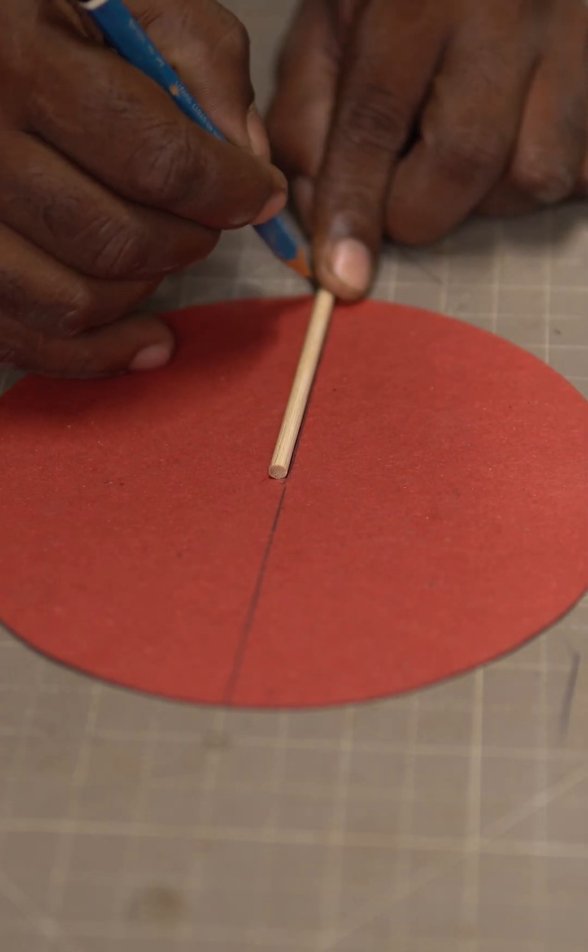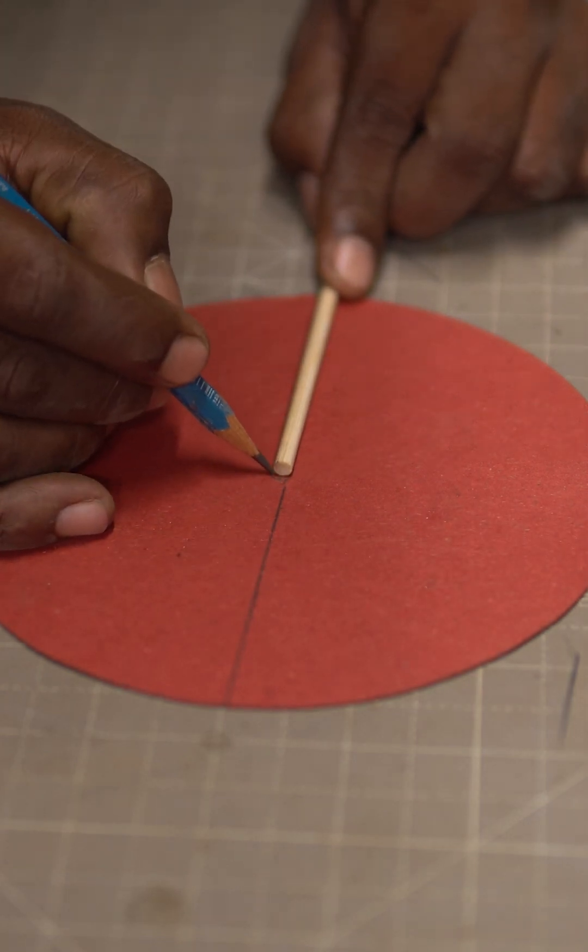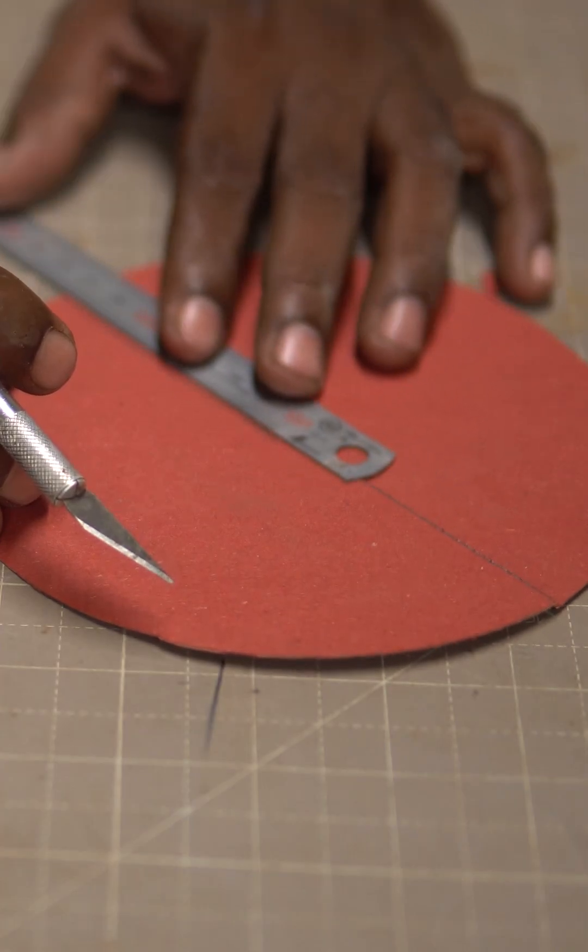Now you can place a skewer from the center to the edge of the circle and draw a line alongside the skewer. Cut according to the shape we have drawn, we should be able to get a semicircle with a flap.